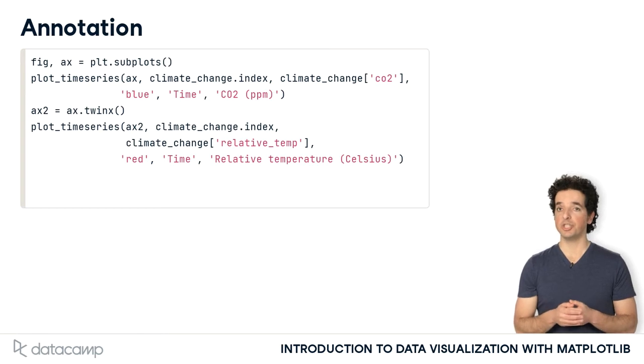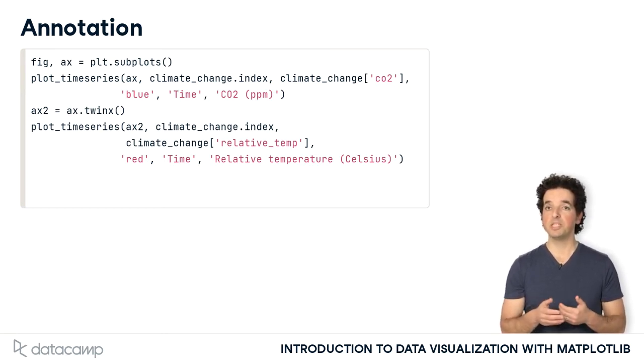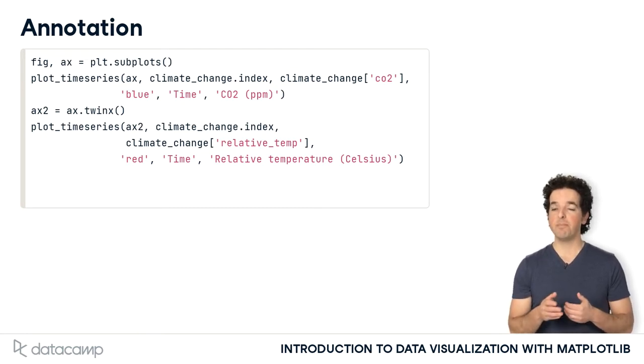One way to draw attention to part of a plot is by annotating it. This means drawing an arrow that points to part of the plot and being able to include text to explain it.